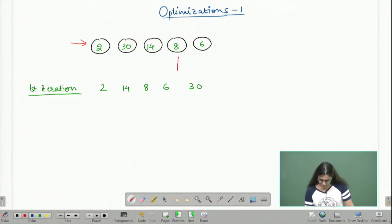After running one iteration of bubble sort, I result with the array 2, 14, 8, 6, and 30.